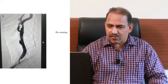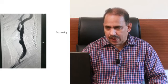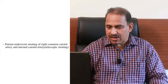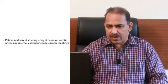This is the unsubtracted view — this is pre-stenting and this is post-stenting. The patient underwent telescopic stenting of the right common carotid artery as well as the internal carotid artery, and on follow-up she never had any recurrence of the TIAs.